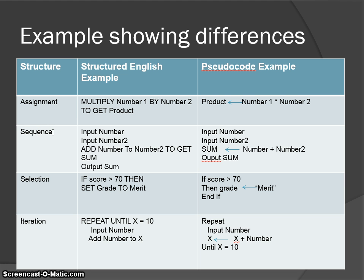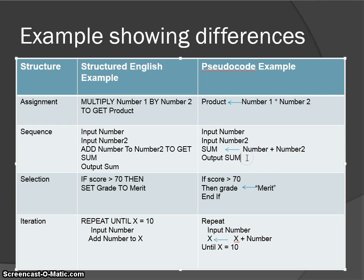Sequence means that each instruction follows the next, so it goes in a certain order. We've got input number, input number two, and sum is assigned number plus number two. So we've got four lines of code that are in sequence — each instruction follows the next: input number, input number two, number plus number two is assigned to sum, and we output the sum. Most code is in sequence; it starts at the top and works its way down.